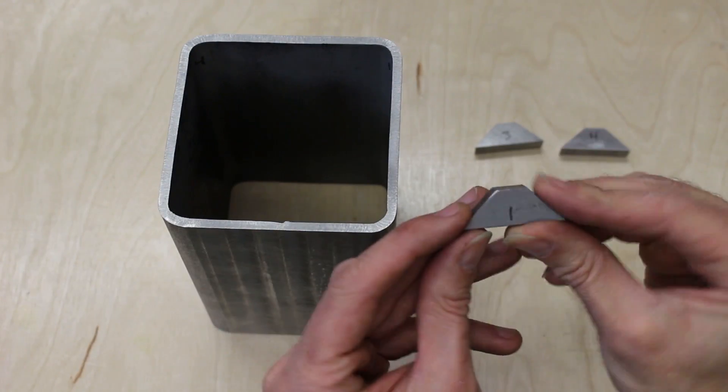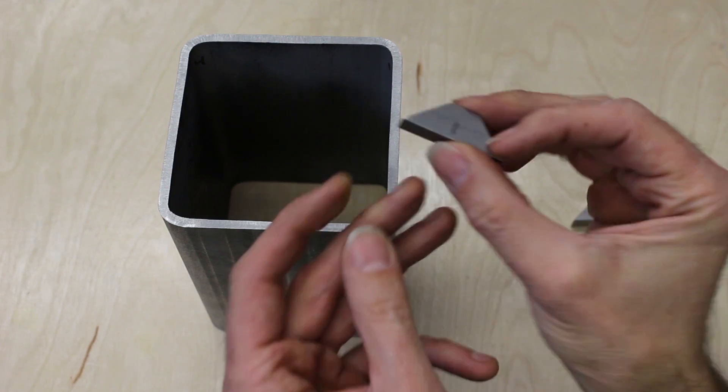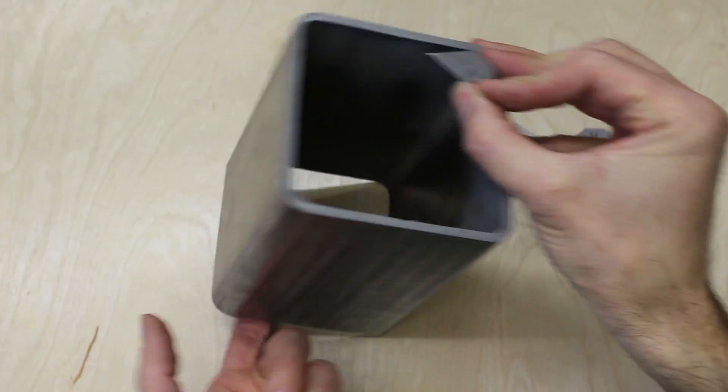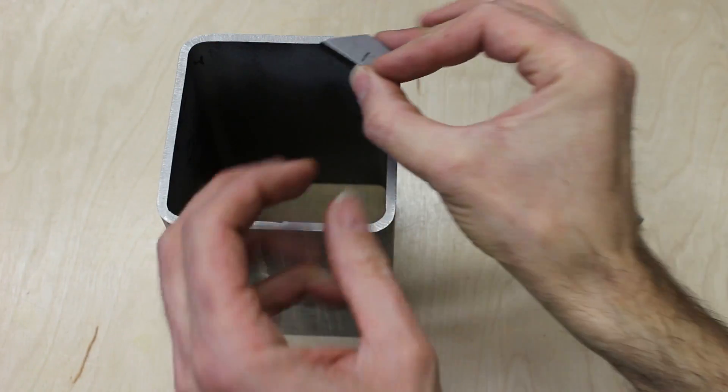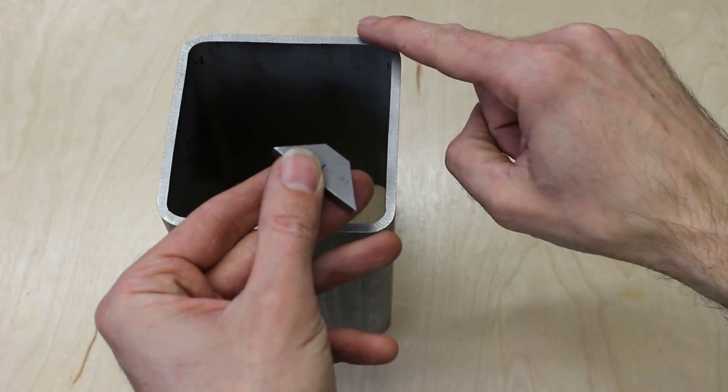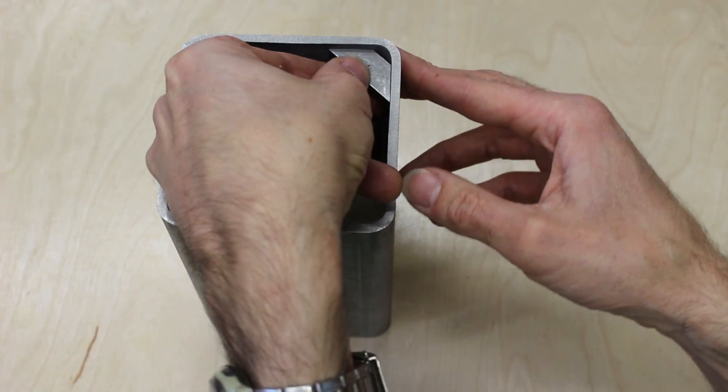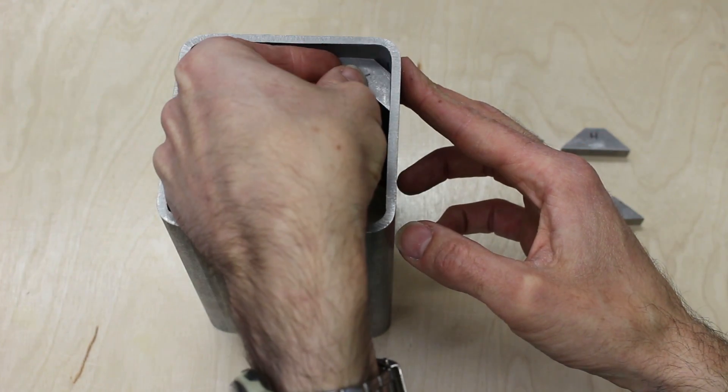The first thing I need to weld are these little corner brackets that will support the flanges of harmonic drive. I have to do this first because I'm going to have to get through the back of the tube to weld onto the back of these. The corners of the tube are not perfectly square so I numbered these and ground each one to fit in its corner so it fits nice and flush.